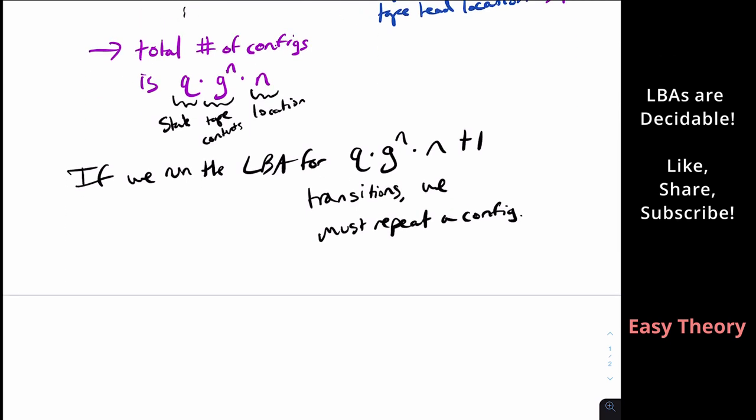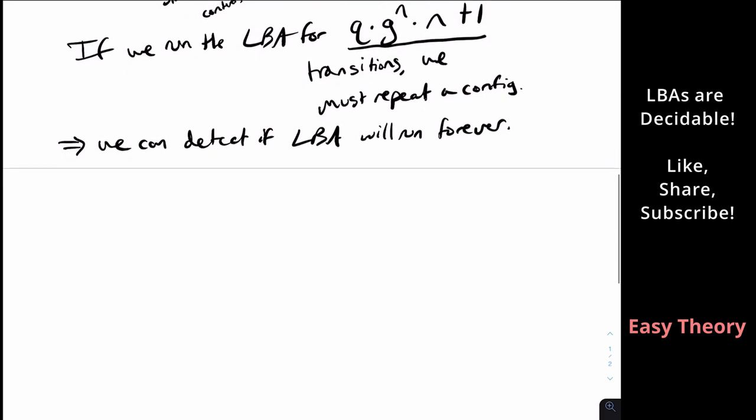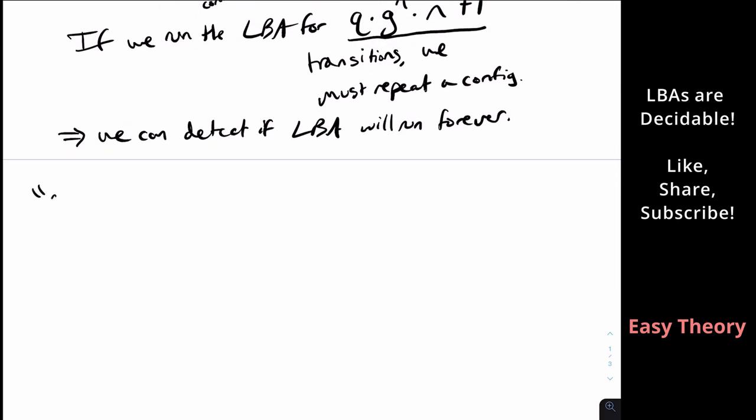So if we ran for that many transitions, we can detect that the LBA will run forever. So we can detect if the LBA will run forever. So how can we make a decider for A_LBA on input M,W? Because remember, we have to get an LBA and an input w. So let's just clarify that here, where M is an LBA and w a string.